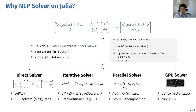The implementation in Julia facilitates such modularity. To create a new linear solver, one can simply subtype MadNLP's abstract linear solver and define a few functions. Then we can simply pass this to MadNLP as an optimization attribute, and MadNLP can perform optimization with this new linear solver.